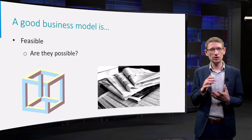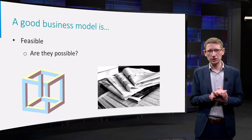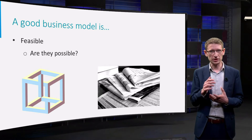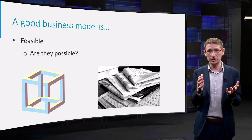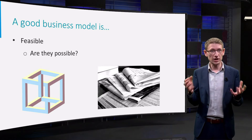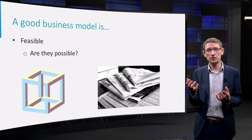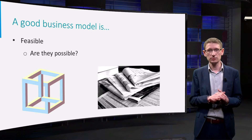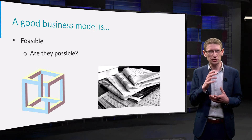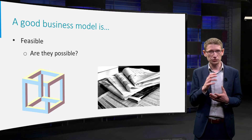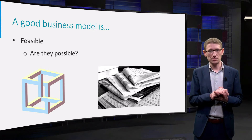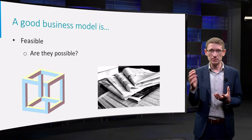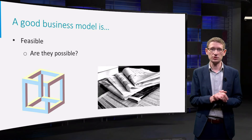For instance, a large newspaper had the idea to start offering old newspaper clippings to their readers. This provided great customer value, since people might be interested to read the news of the day that they were born. Great business value, because the website could show advertisements that bring in money. But what the newspaper company forgot was that they did not own those old newspaper clippings, and their old freelance journalists would have to give permission. So on paper the business model created customer and business value, but in practice it wasn't feasible.